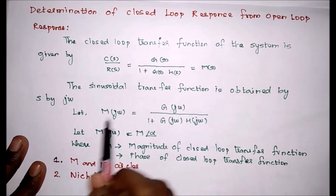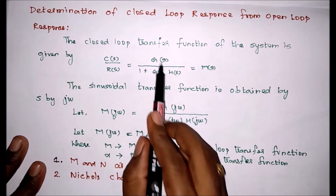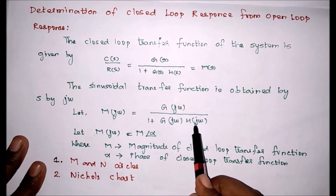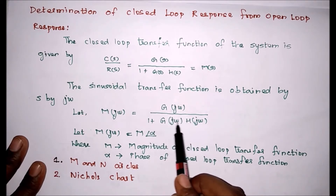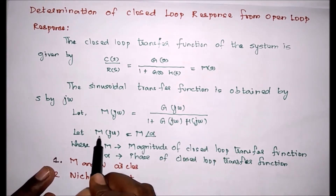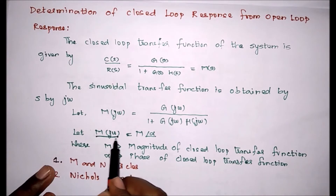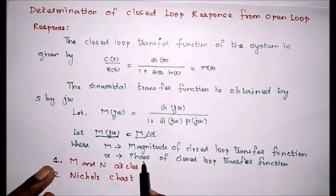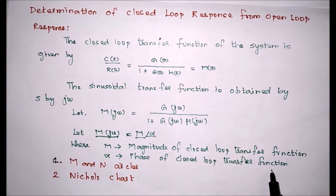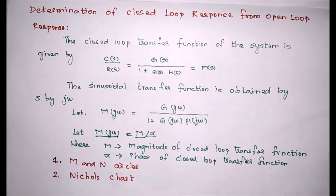The sinusoidal transfer function is obtained by substituting S equal to J omega. Therefore, for S equal to J omega, M of J omega equal to G of J omega divided by 1 plus G of J omega into H of J omega. Here M is the magnitude of the closed loop transfer function and alpha is the phase of the closed loop transfer function. The magnitude and phase of a closed loop system are functions of frequency omega.